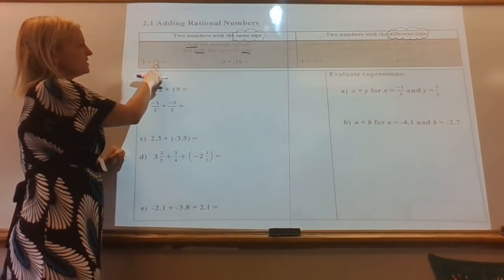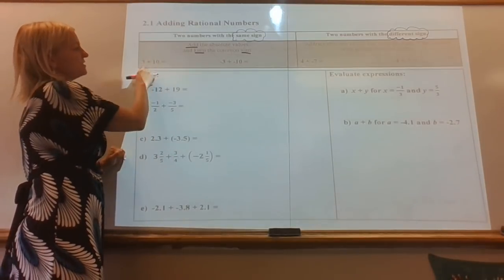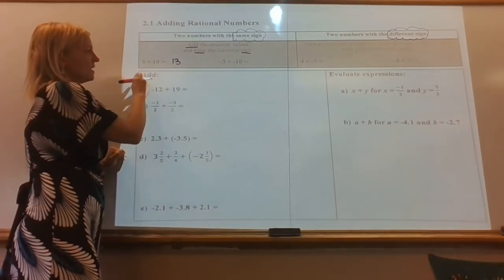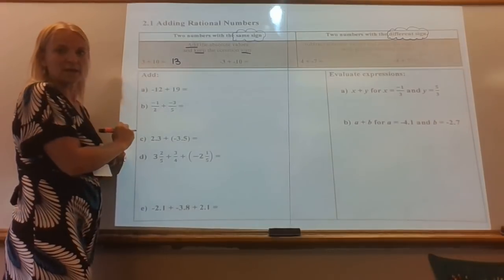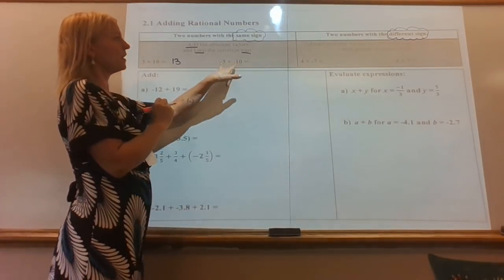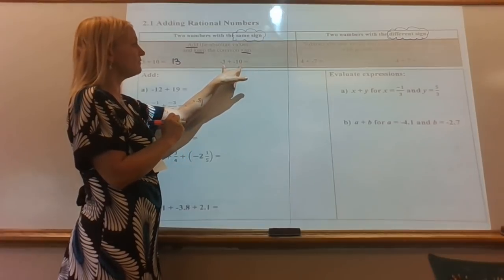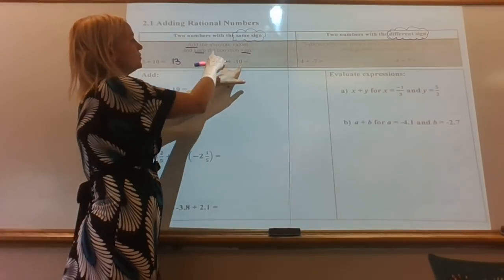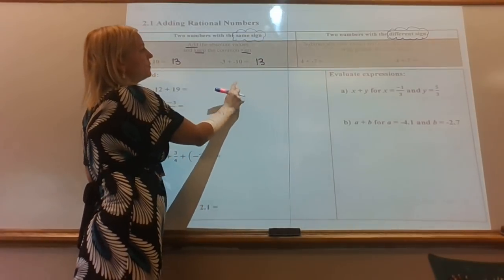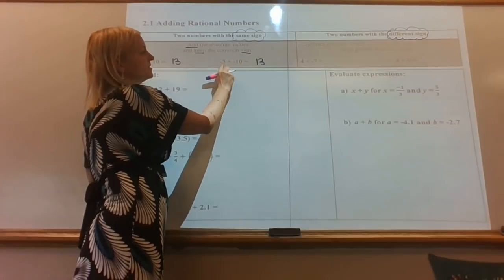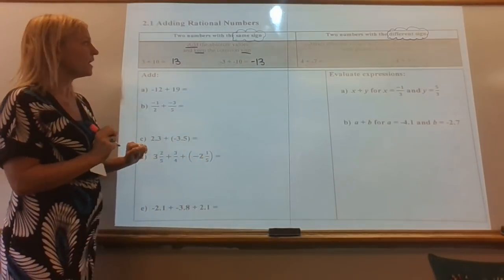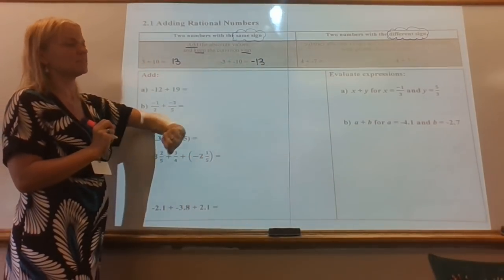So 3 plus 10 — those are the same sign, so I add them. Three plus ten is thirteen. Keep the sign: the sign is positive, so it's positive thirteen. And over here, these two are both negative, so I'm going to add them. Three plus ten is again thirteen, but this time the common sign is negative, so the answer is negative thirteen. That's when they're the same sign.